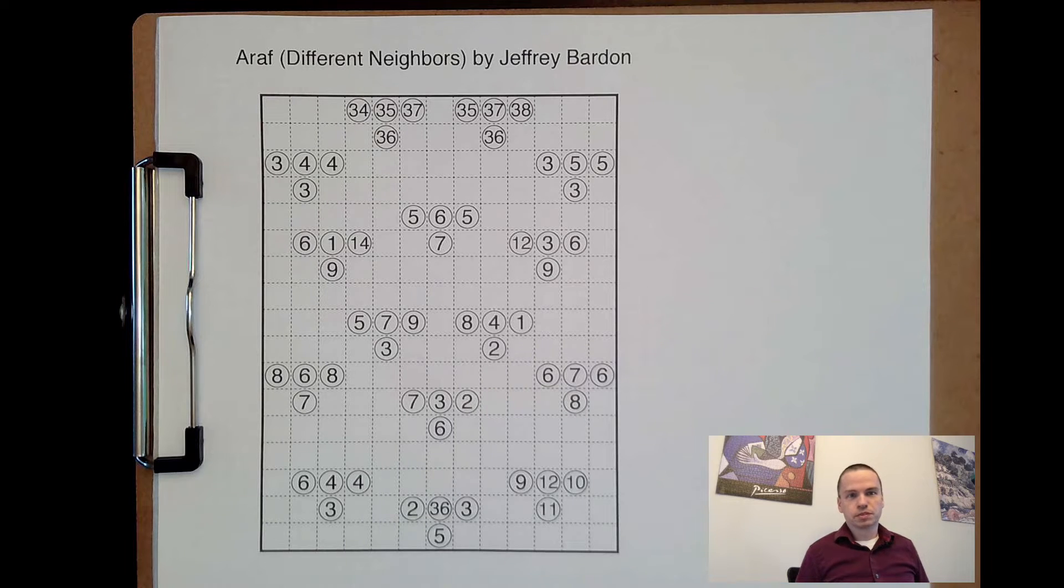So we're here to talk through this Sunday's Stumper, which is an Araf different neighbors puzzle by Jeffrey Barden.